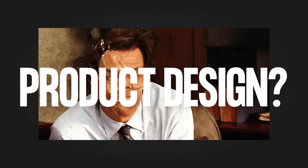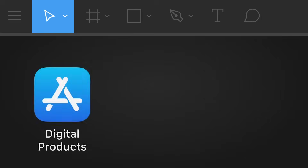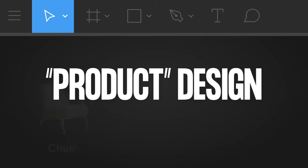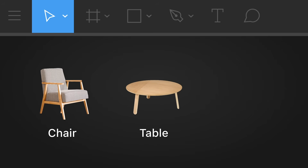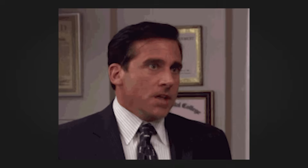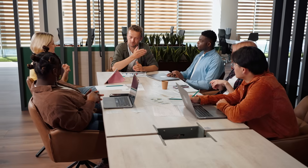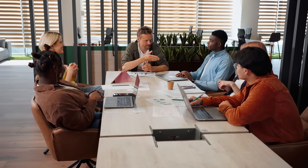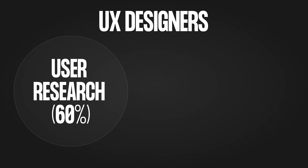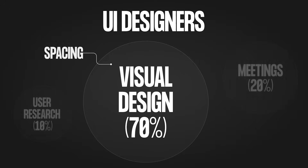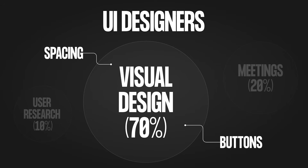But what about product design? What does that mean? Well, you're going to love this. Product design is the process of designing digital products like mobile apps and other software — not to be confused with product design, which is the process of designing physical products like chairs, tables, and other items. What? I get it, you're mad. I'm mad too. Whoever came up with these terms needs to be thrown in jail immediately.